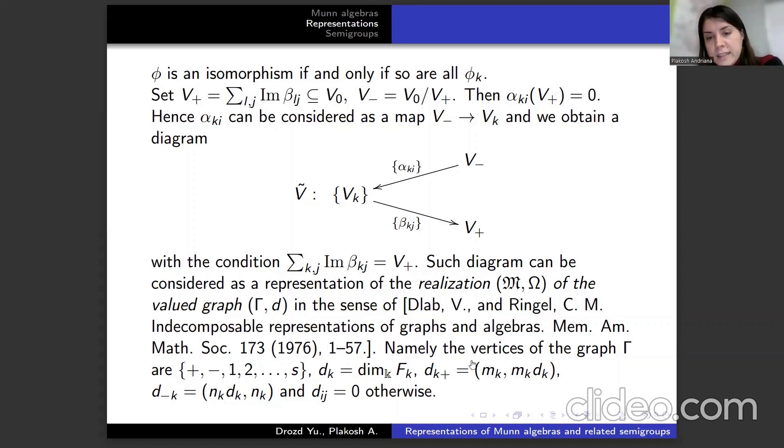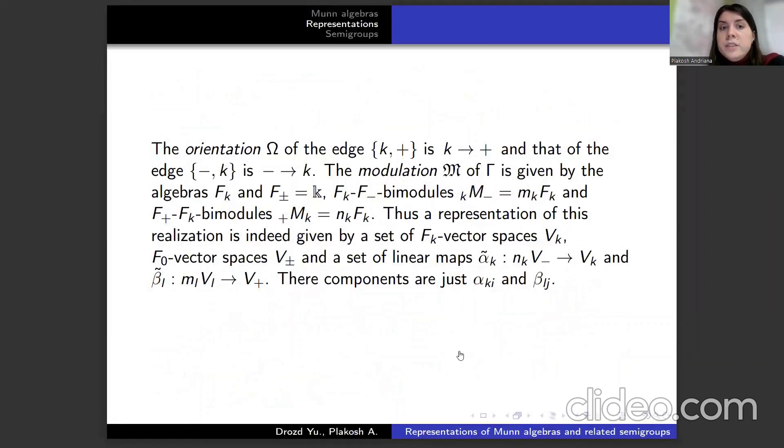Namely, the vertices of the graph H are +, -, 1, and so on to s. dₖ is the dimension of Fₖ over k. dₖ₊ is mₖ, dₖ₋ is nₖ. The orientation ω of the edge k⁺ is from k to + and that of the edge k⁻ is from - to k.